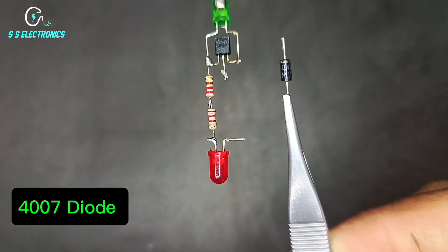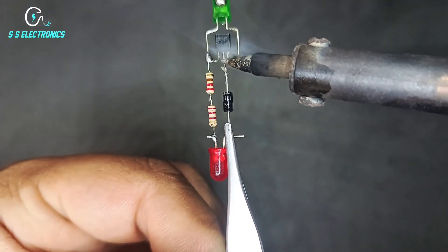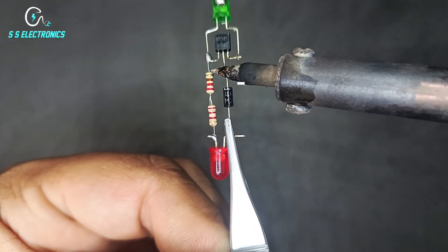4007 diode. Diode negative side connecting with transistor base pin.